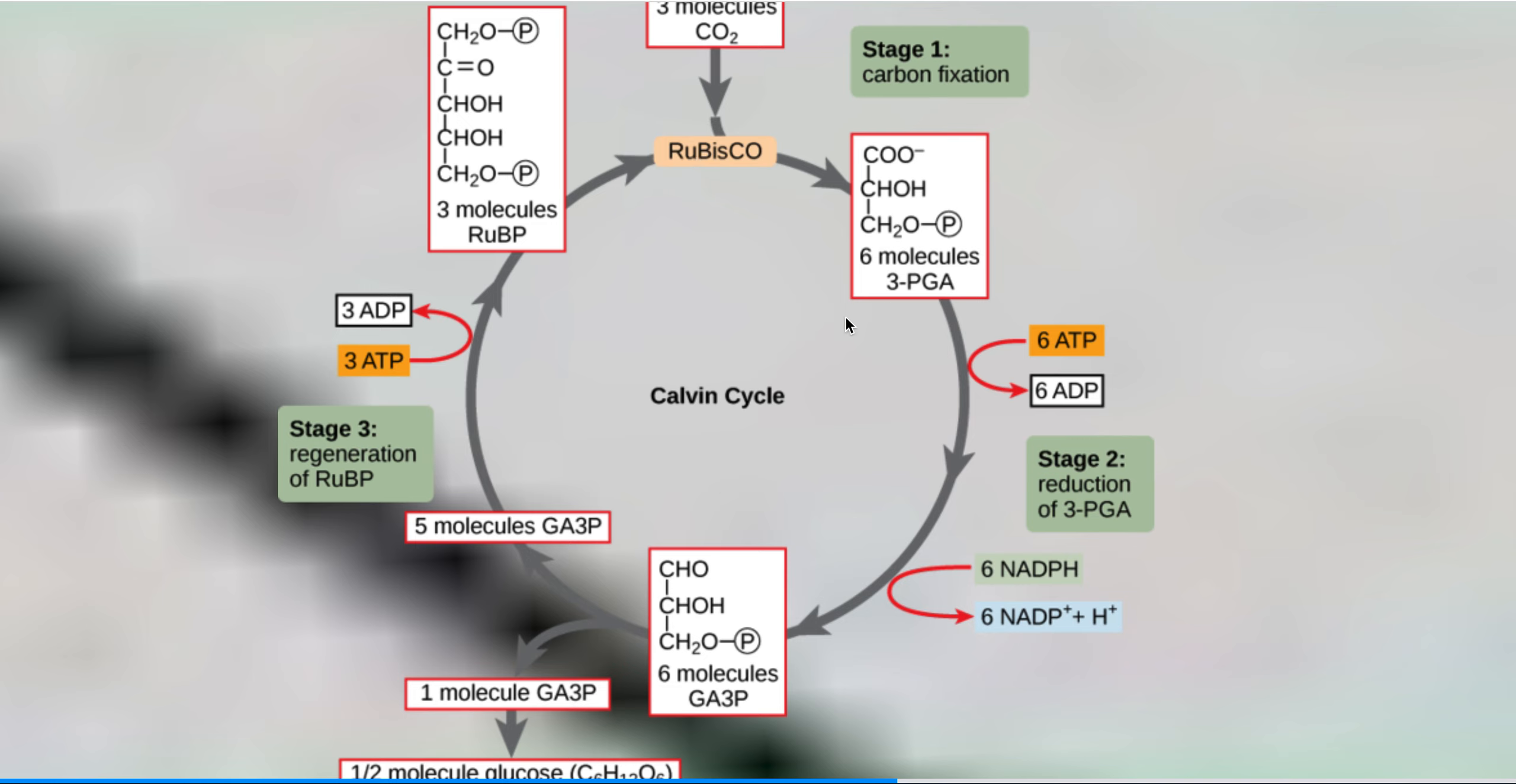So you can work on all the stoichiometry here if you want. But, you know, this is basically the Calvin cycle. So note that if you have five molecules of three carbons, you can make three molecules that are five carbons long because, you know, three times five, five times three, it's the same amount of carbons. All right.